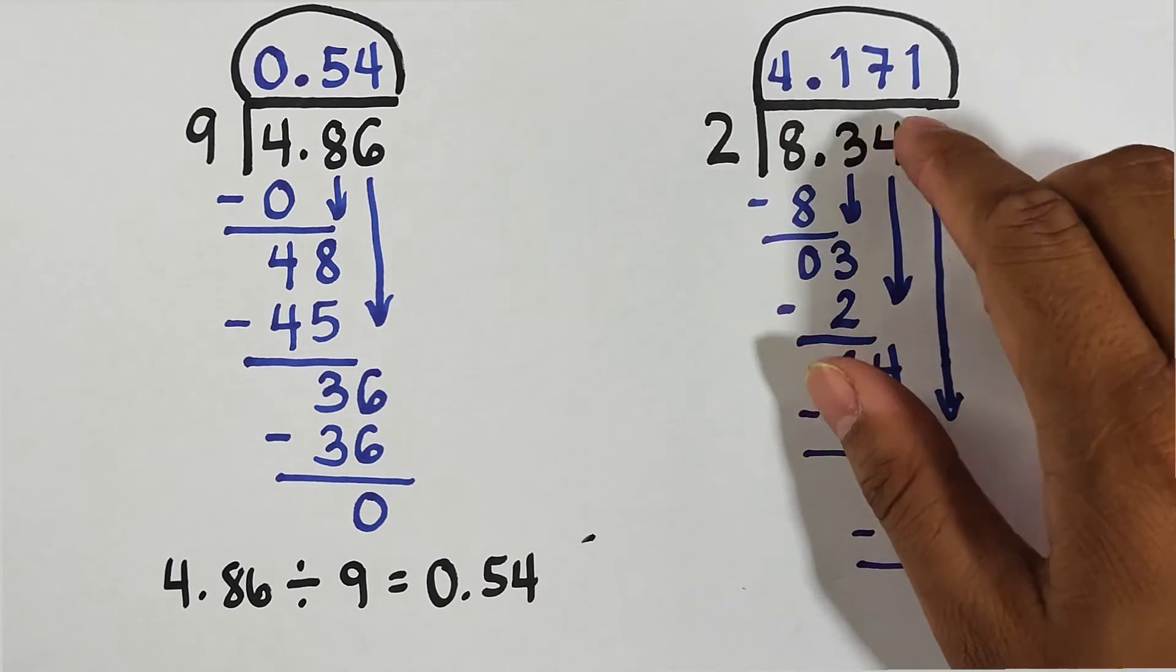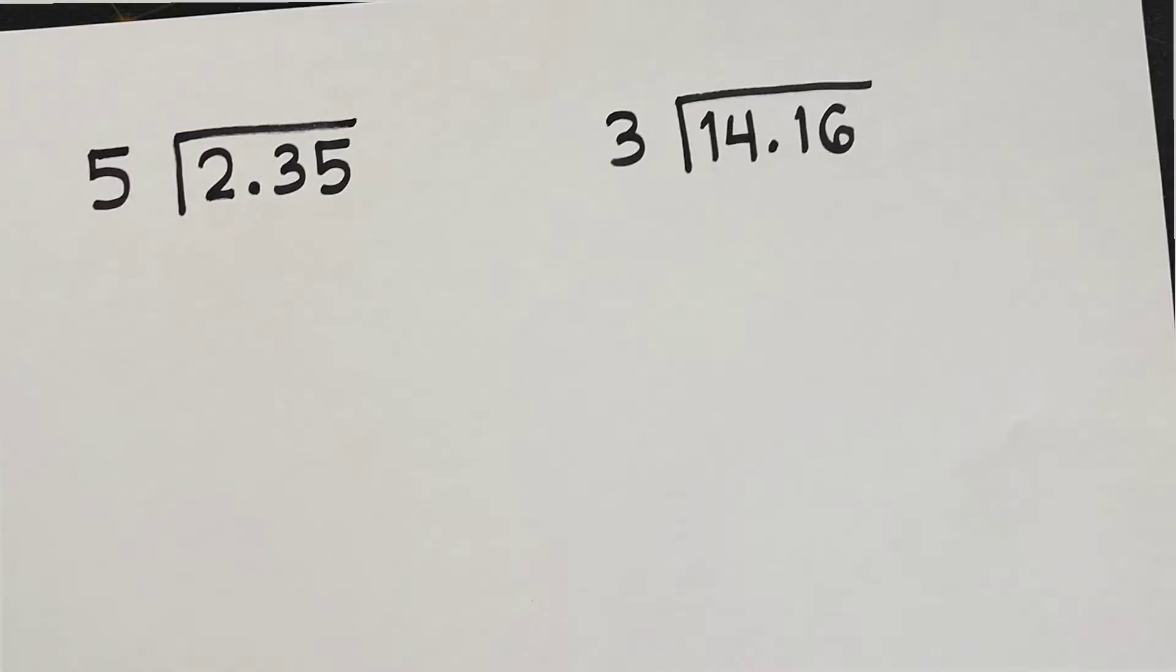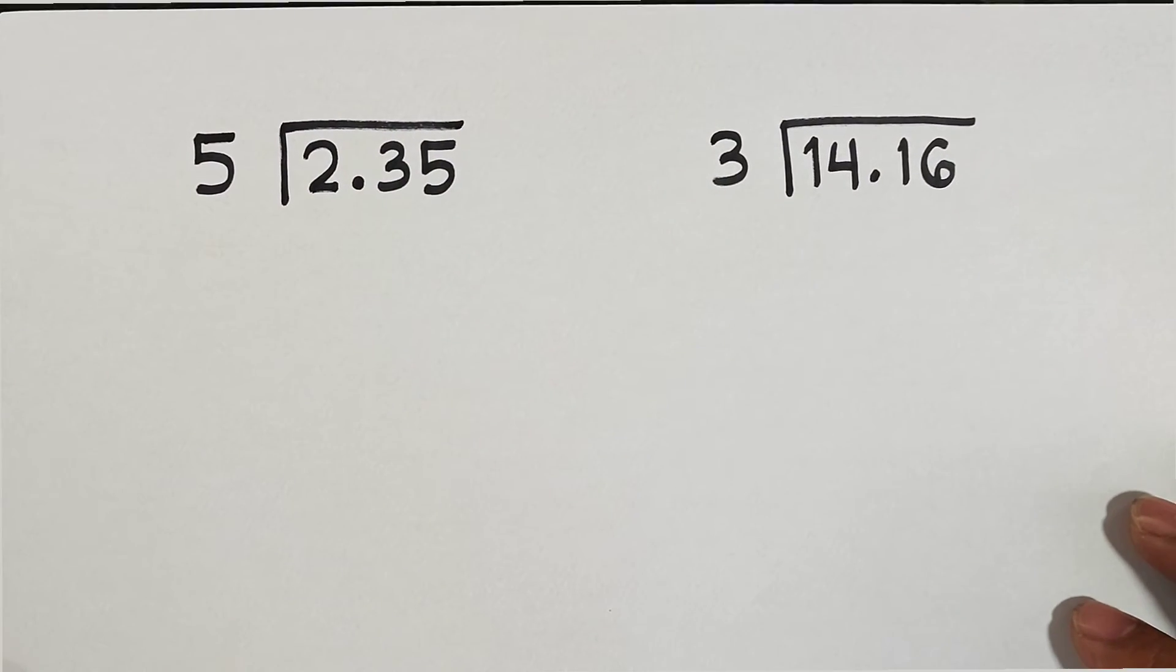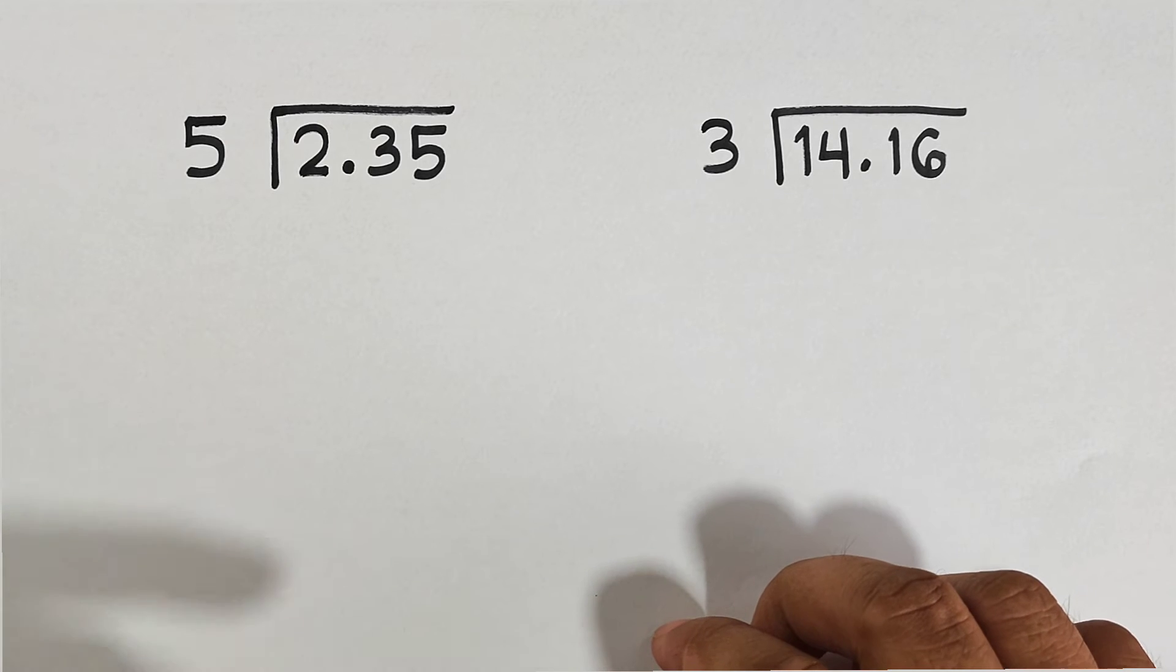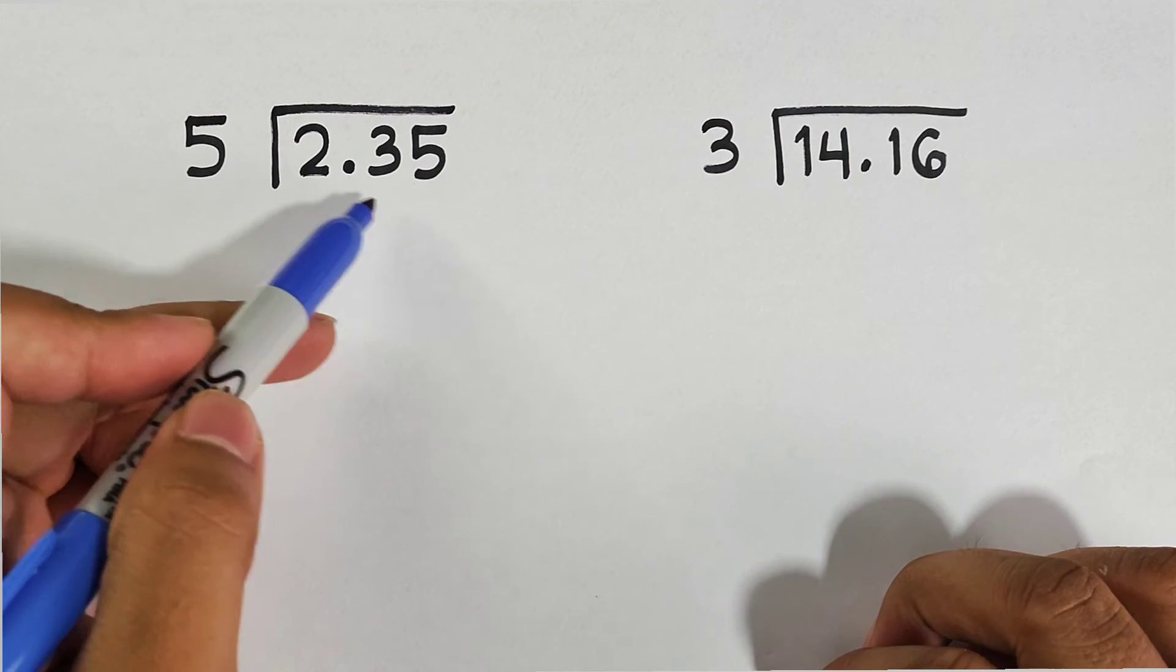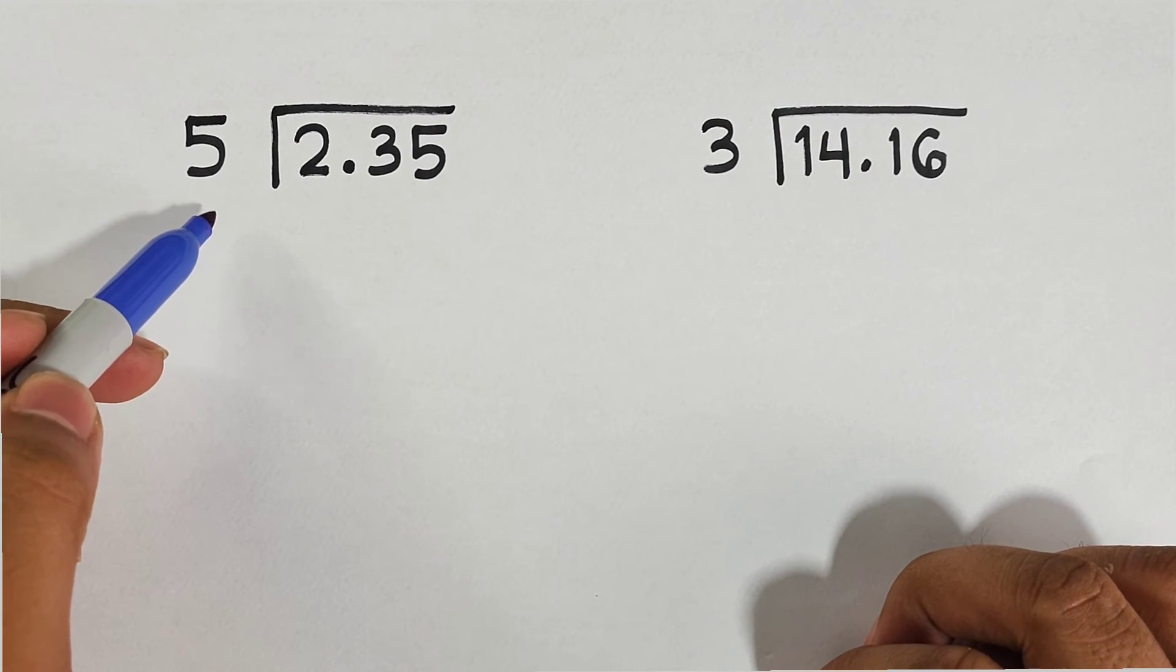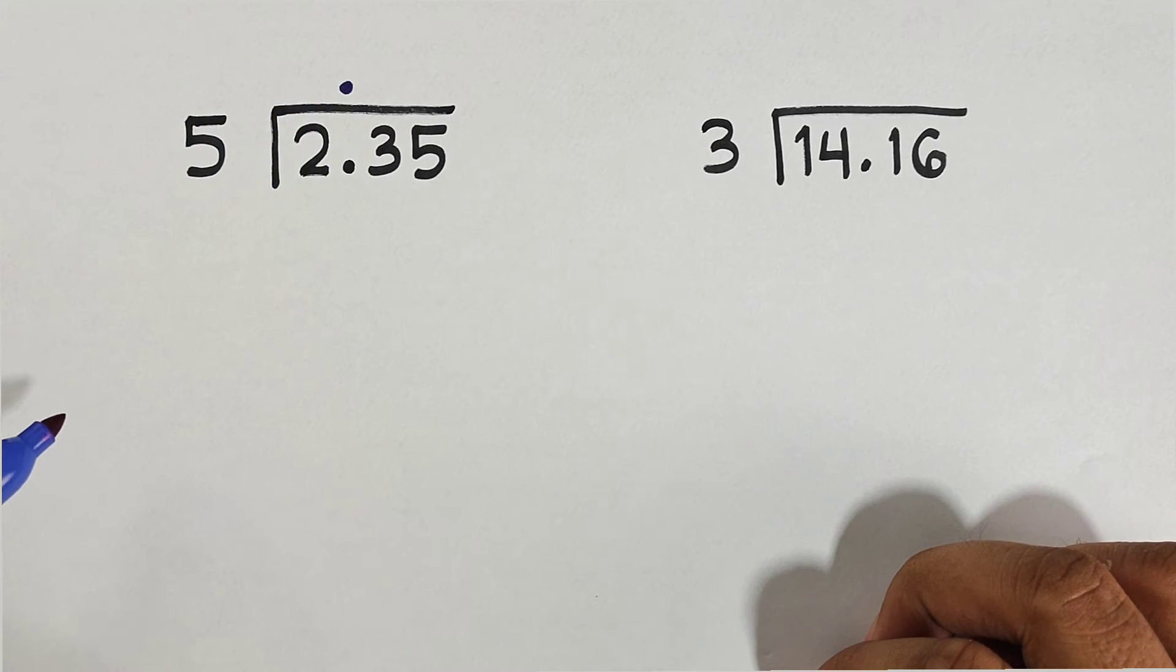So let's have our third example. For this example, you can pause the video for a while and you can try dividing 2.35 by 5. Again, you can pause the video for a while. Now let's continue here. The dividend is 2.35, the divisor is 5. So first we will put the decimal point here at the top of it.